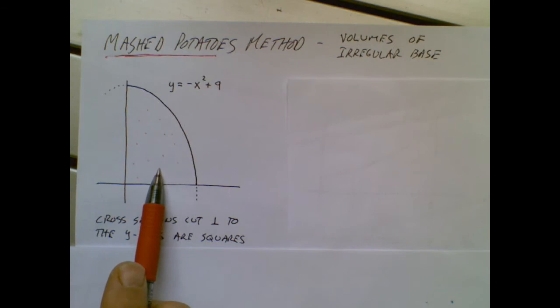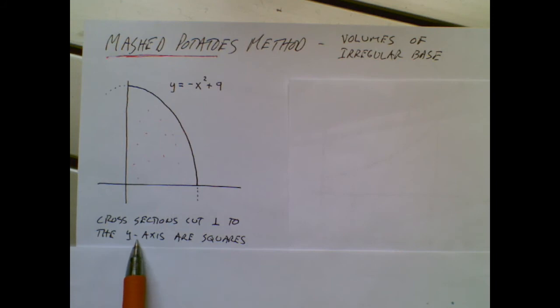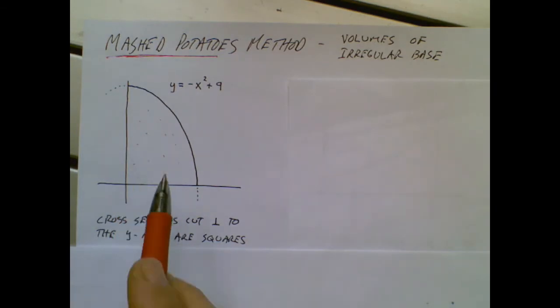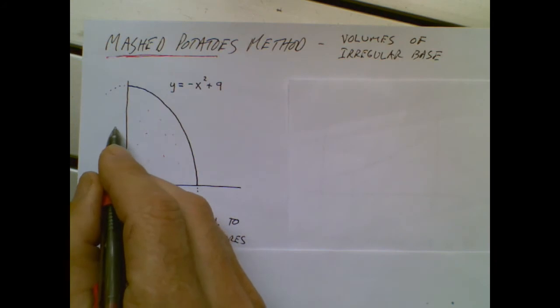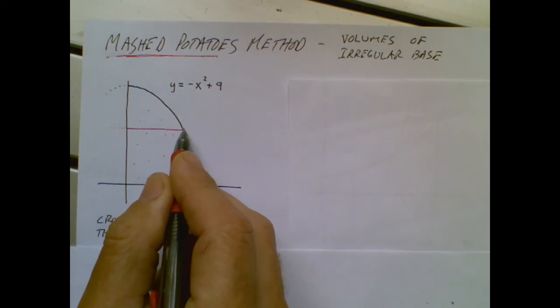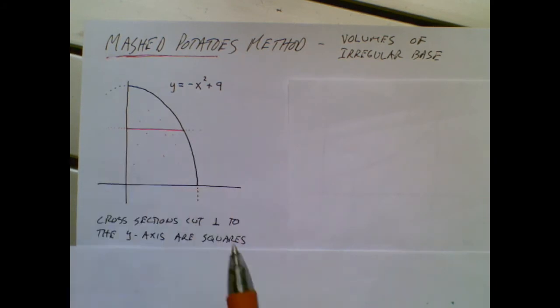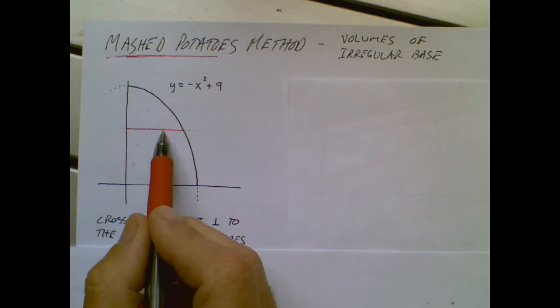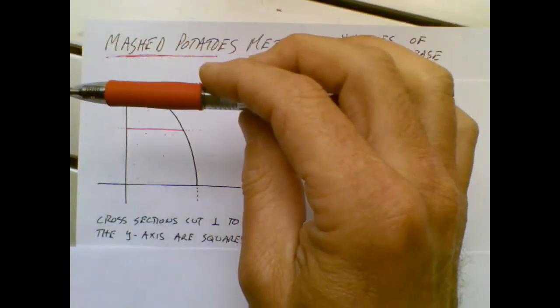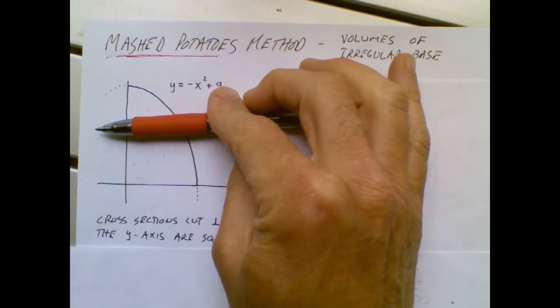This is the base of a pile of mashed potatoes, and cross sections cut perpendicular to the y-axis are squares. Here's what this means. If I imagine a pile of mashed potatoes growing straight up out of the paper, and I did a cut that is perpendicular to the y-axis, imagine kind of a knife just going straight down through the mashed potatoes until it hits the bottom.